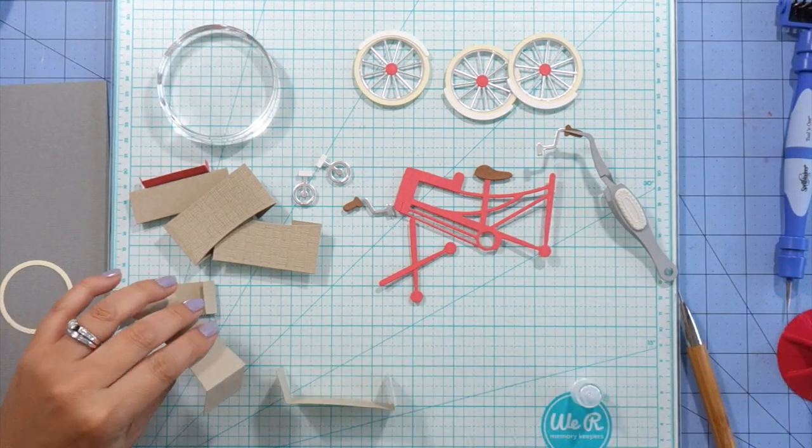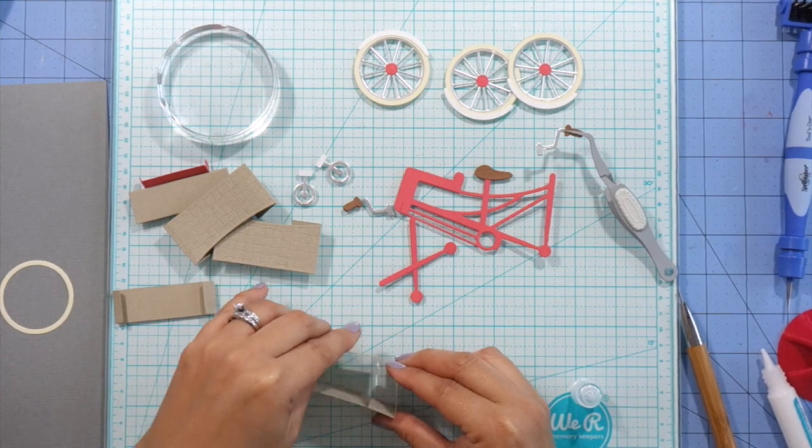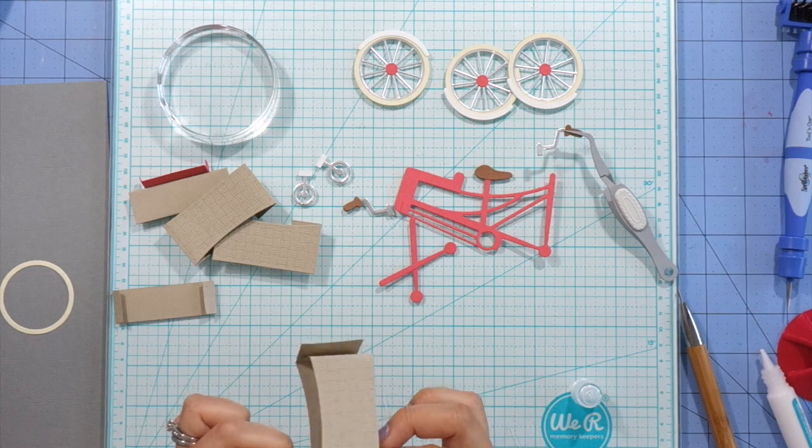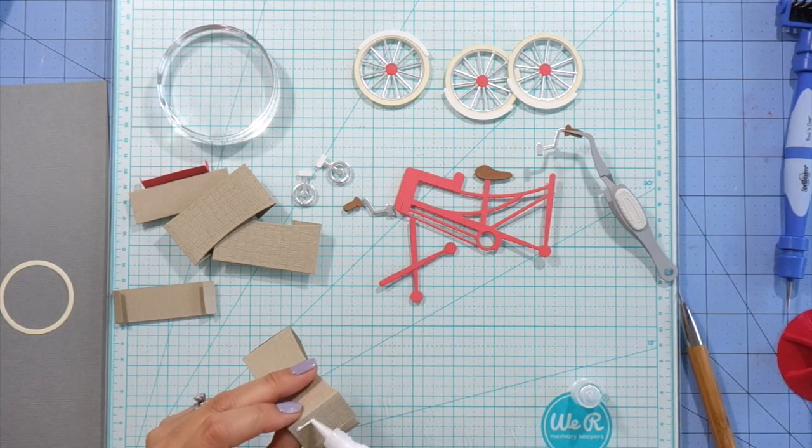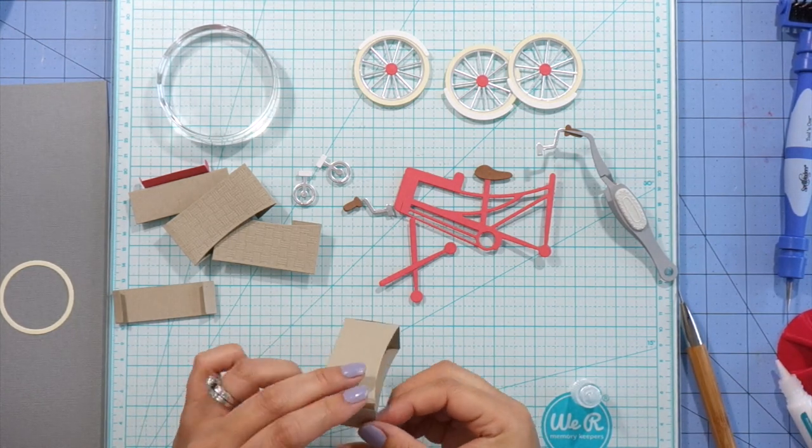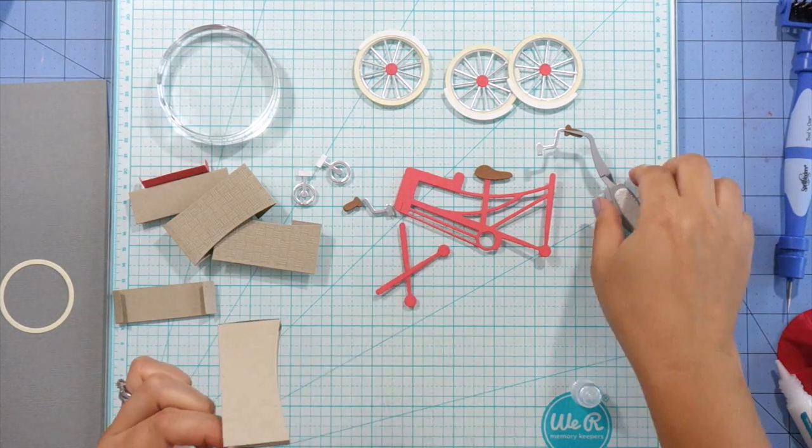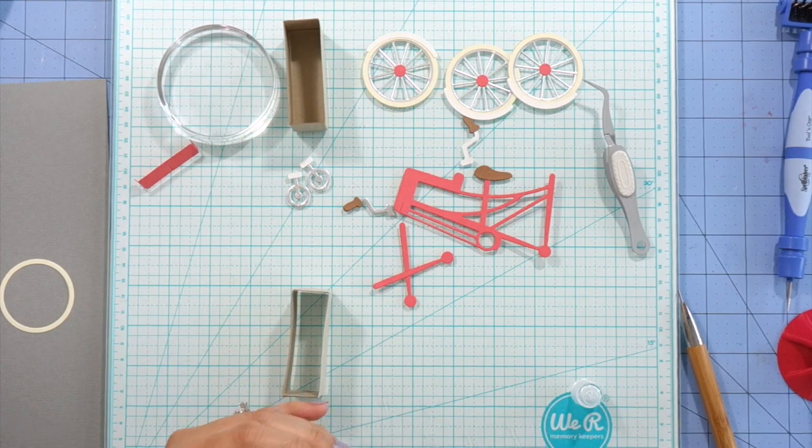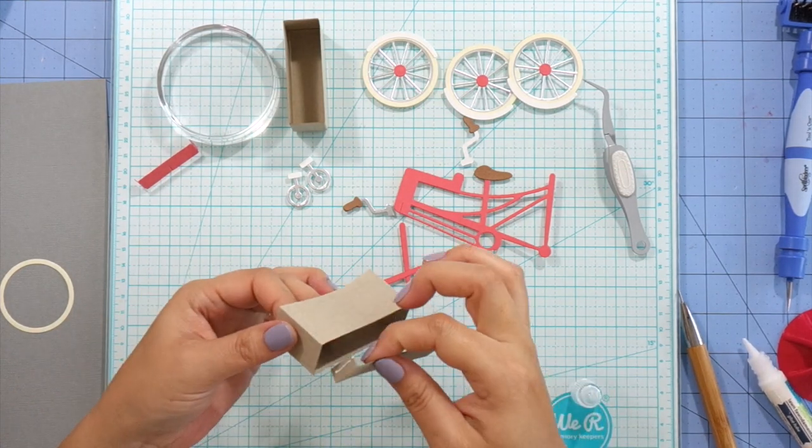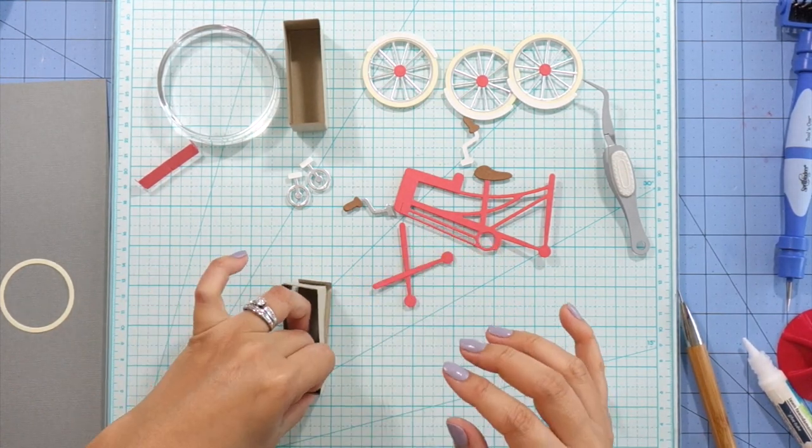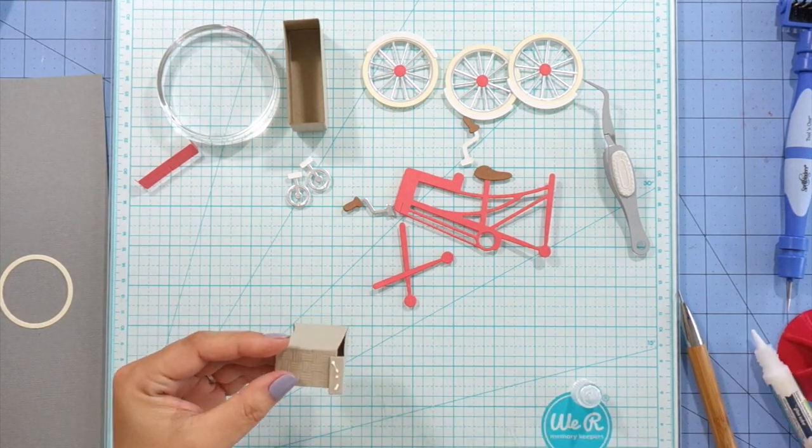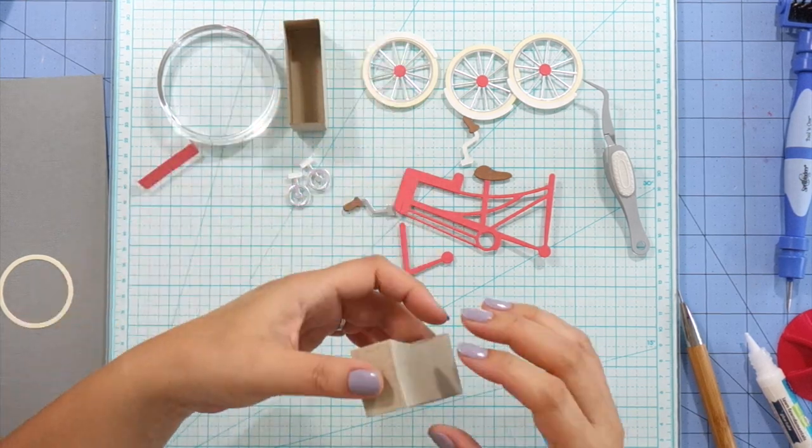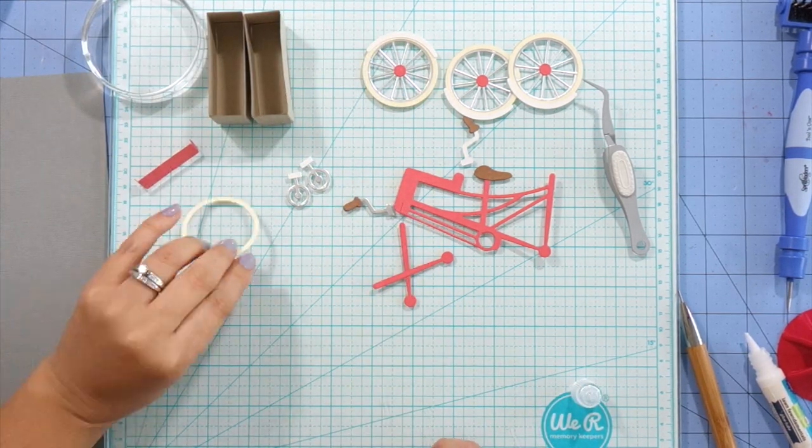Each basket is going to need two side pieces and one bottom piece. I'm going to be using liquid glue to attach them, so you want to glue one of the side pieces and do the same for the other side. Then I'm going to go ahead and glue the bottom of the basket in. You can see I glue in one side first and then the other side and then kind of tap it down to make sure it's even and then I'll set those aside to dry.